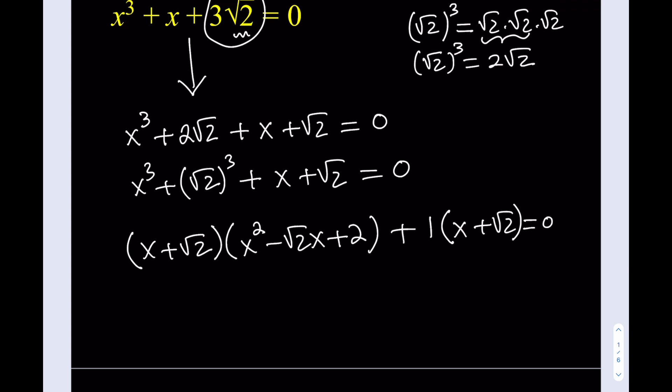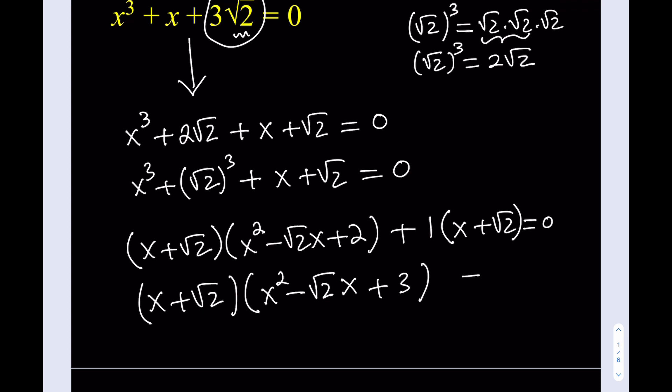That's equal to 0. Now, x plus root 2 is a common factor, so let's take that out. Once we take that out, we're going to be getting x squared minus square root of 2 times x, plus 2 plus 1, which gives me a 3. So now I do have it factored. My equation has been factored — if you don't believe that, you can go ahead and distribute, and you should be getting the original equation.